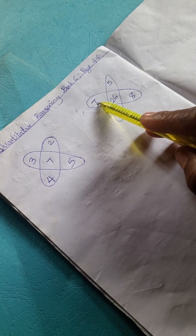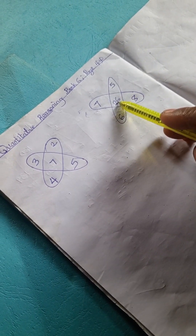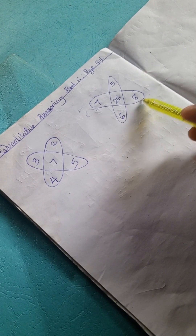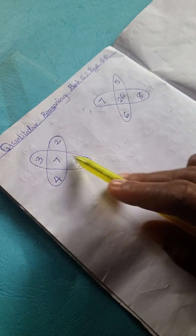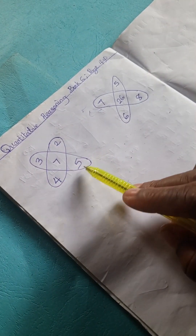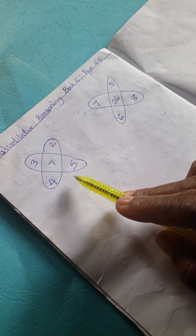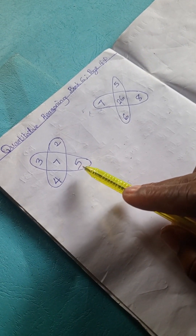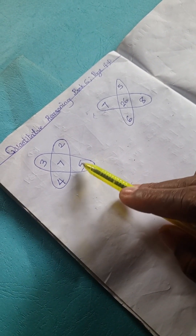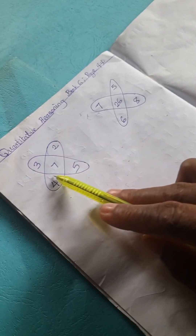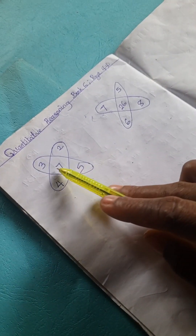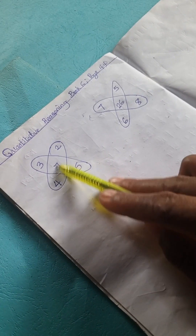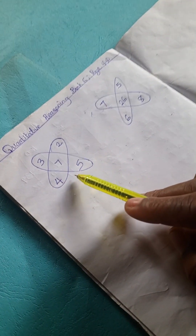We have this problem before us: the set of numbers 3, 2, 7, 4, 5. For the worked example we have 7, 5, 26, 6, and 8. We're going to walk through this problem right now. Looking at it, we need to understand what happened to produce the middle number, 7.